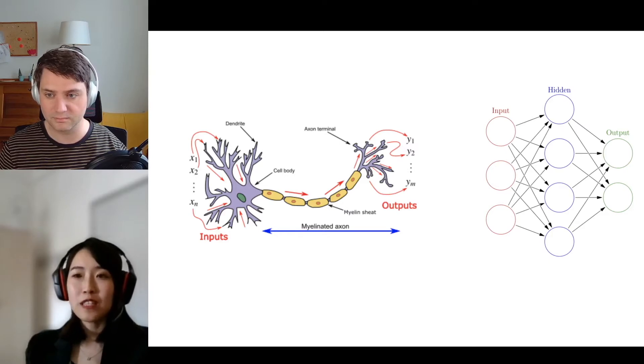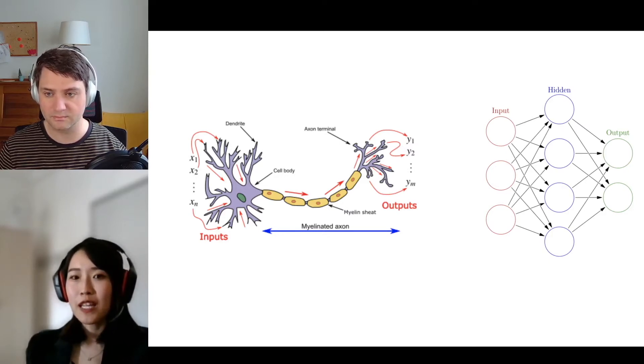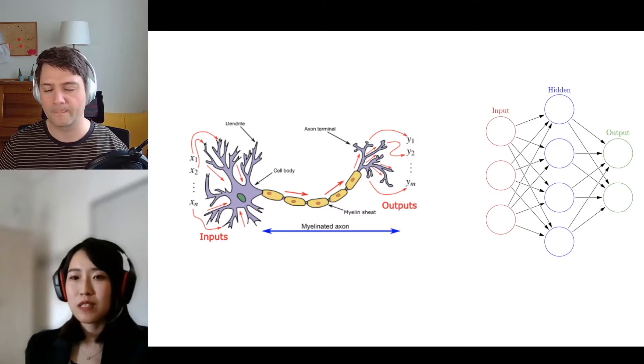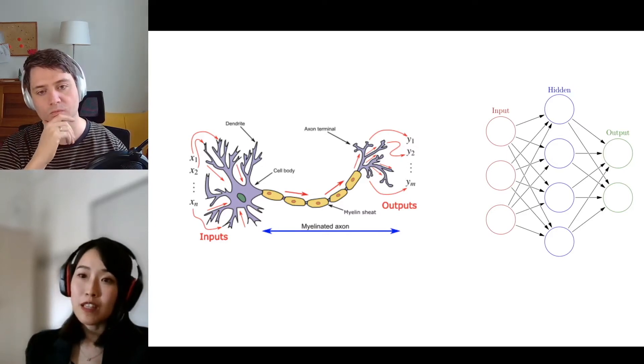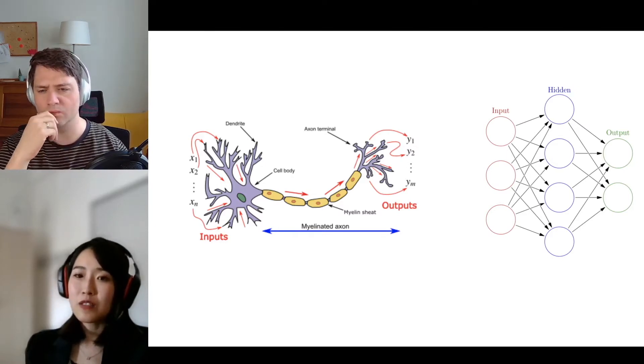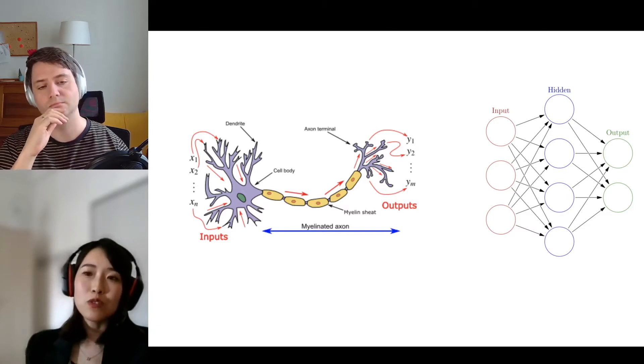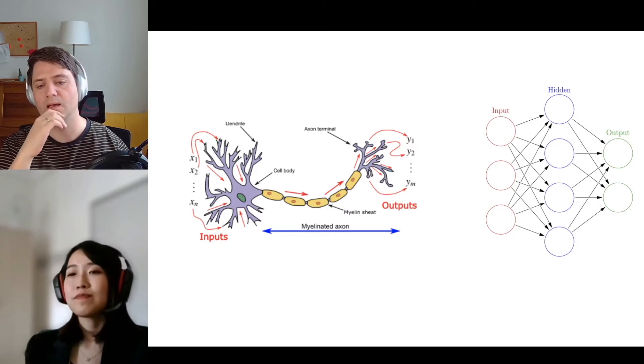So artificial neural network resembles the communications of brain cells mathematically. So a single neuron is shown on the right side. The circle is a single neuron. It's a function, a mathematical function consisting of weight and bias. It receives real numbers from neurons in the previous layer and generates another real number and transmits it to neurons in the next layer. I got it.